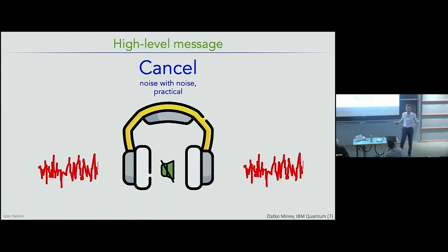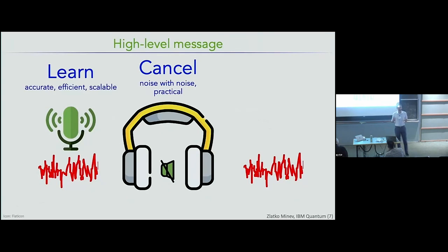The high-level take-home messages, before we dive into the talk itself, are that one, noise is here to stay. We can't get rid of it, but that's okay, because two, we can now begin to learn noise in a scalable, efficient, and accurate way, so that we can use that knowledge to then cancel the noise. And three, there's a no-free-lunch theorem. This doesn't come like a silver bullet, there is a cost associated with this that comes in the sampling overhead.